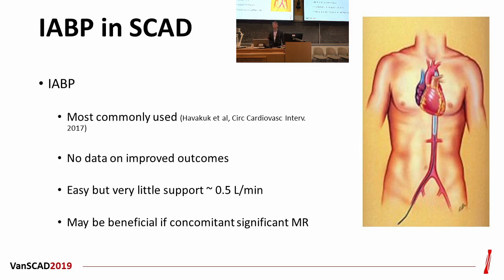There's absolutely no data showing the balloon pump improves outcomes in either SCAD or cardiogenic shock. Part of the problem is that even though it's an easy device to put in, it only provides 0.5 liters per minute of support. The normal heart pumps about 5 liters per minute, so if you're in cardiogenic shock pumping less than 2 or 3 liters, adding 0.5 liters really doesn't do very much. There's nothing from a physiology or data standpoint that supports continuing balloon pump use.